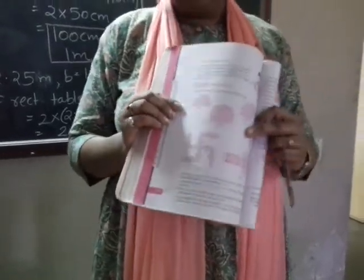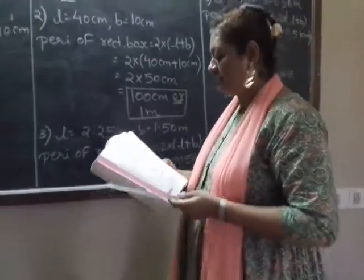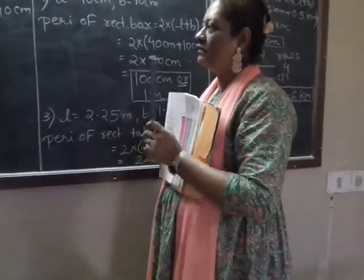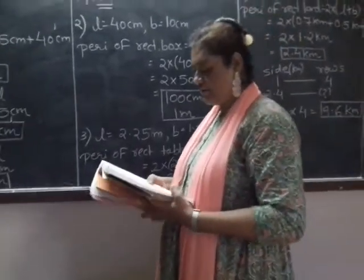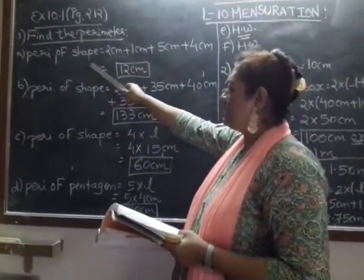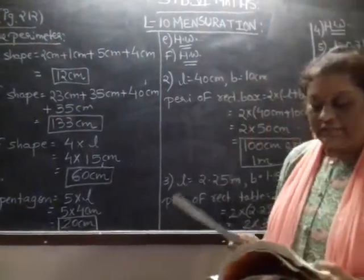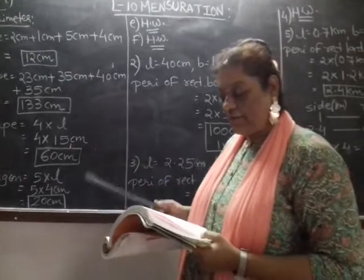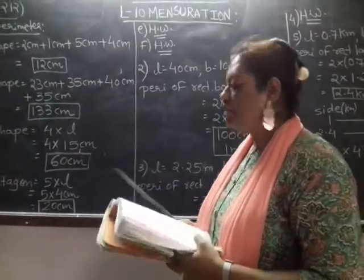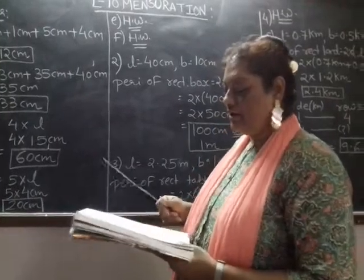Perimeter means the boundaries of the objects we have to count, right? Boundaries or the surroundings of the objects. Perimeter of shape, we do not know what the shape is about or what is the name. So generally we will write perimeter of shape and whatever the measurement is given in centimeters. For counting the perimeter we only have to add the measurements given around the object.